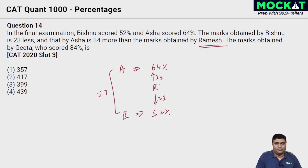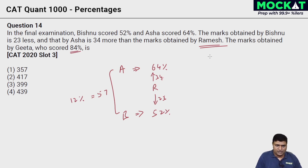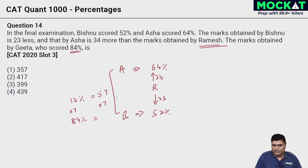This 57 corresponds to the percentage difference of 64 − 52 = 12% of the total marks. The marks obtained by Gita who scored 84% — from 12% we get to 84% by multiplying by 7. So from 57 we multiply by 7: 57 × 7 = 399. But wait — 15 × 7 = 350 and 49 here, giving 399 as the total marks. So 84% of 399 — option 3 is the answer.